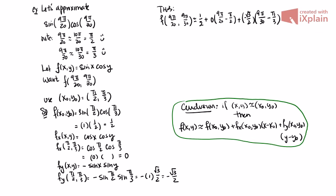Thus f(9π/20, 9π/30) ≈ 1/2 + 0 · (9π/20 − π/2) + (−√3/2)(9π/30 − π/3). That's our final answer — just arithmetic from there on out.